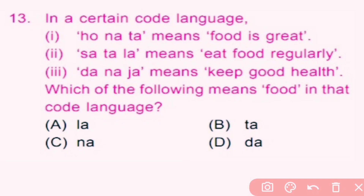Question number 13: In a certain code language, which of the following means 'food'? In options 1 and 2, 'food' is common, and in those same options 'ta' is the common code word. So 'ta' means food in this code language. B is the correct answer.